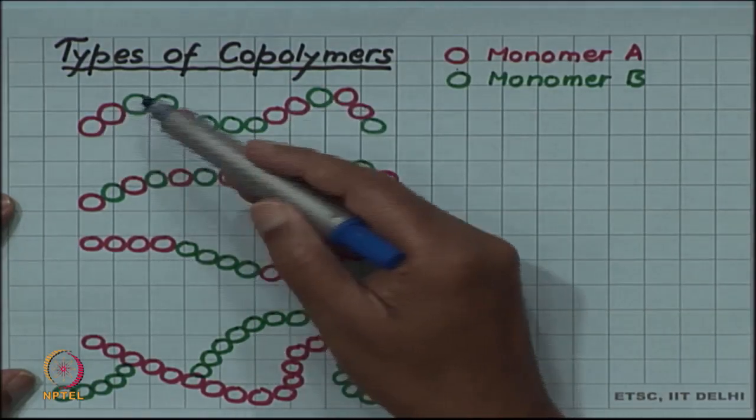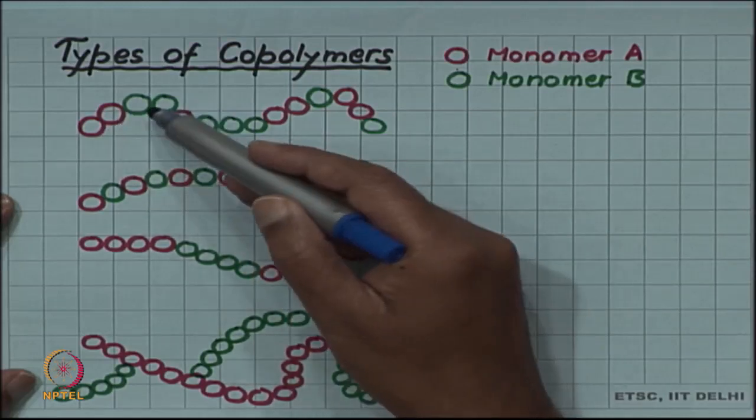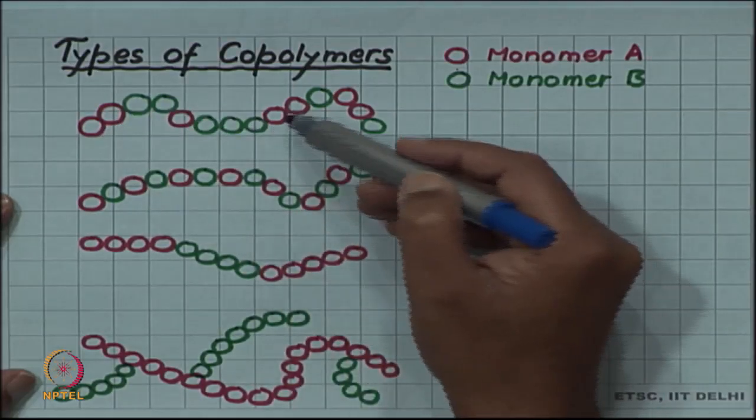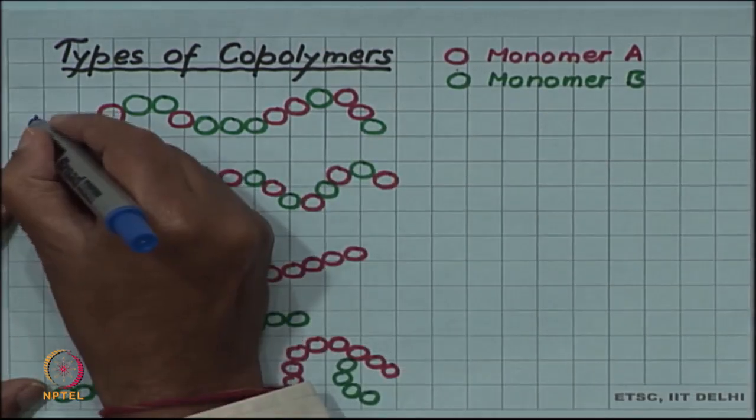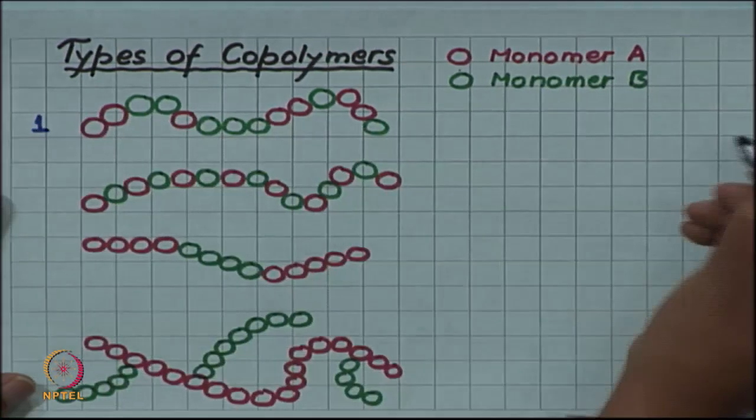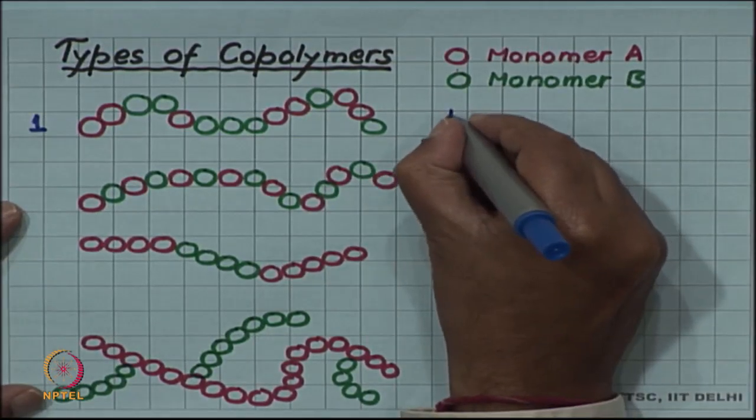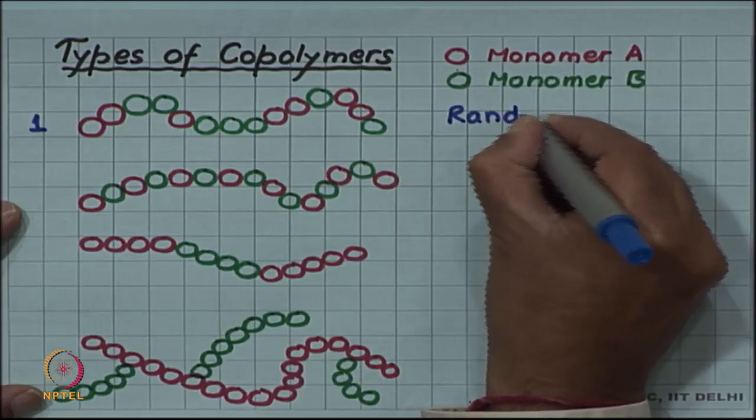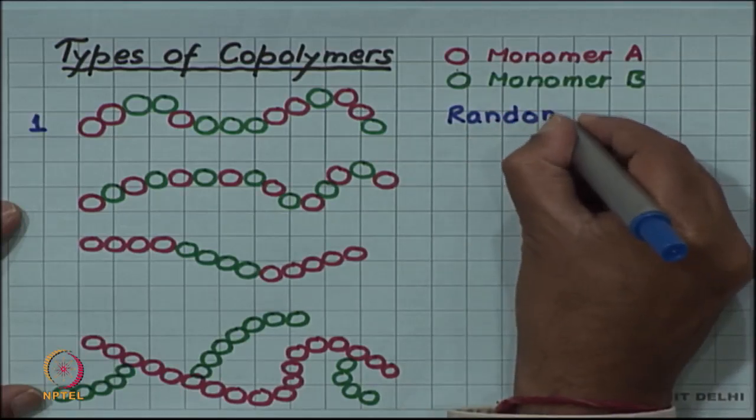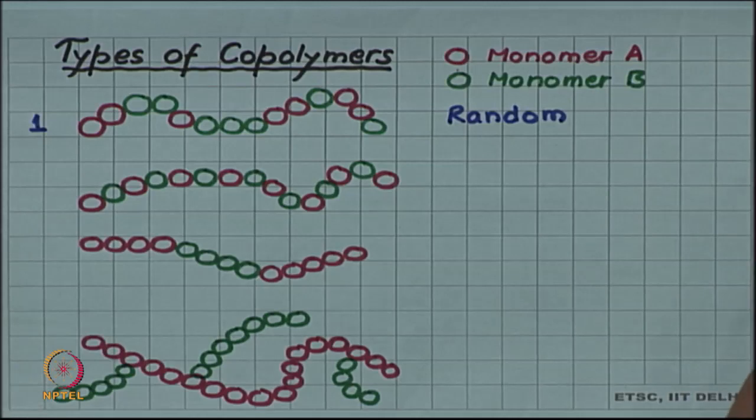So you have, say for example, A A then B B A B B B and so on. Then this kind, the first type, is called a random copolymer.